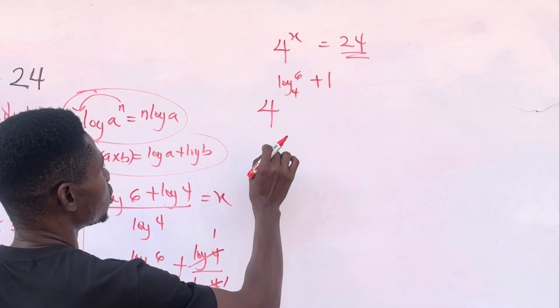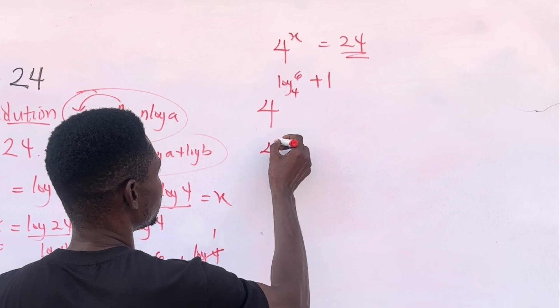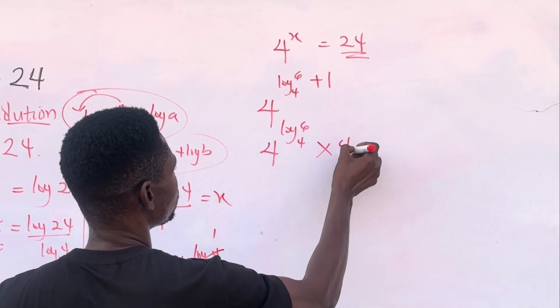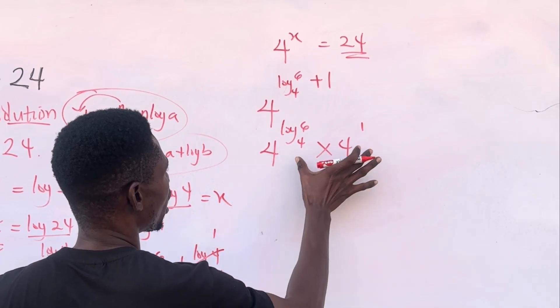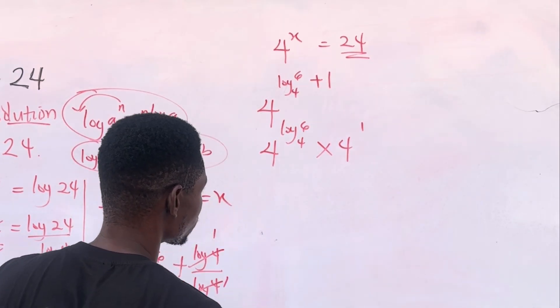So remember our law of indices. This can be written as 4 raised to the power log 6 base 4 multiplied by 4 raised to the power 1. Remember, same base, you add the powers. So we're just expanding it again.